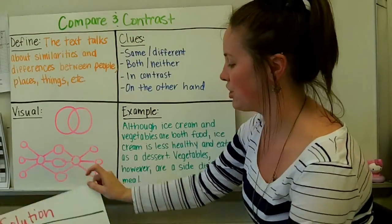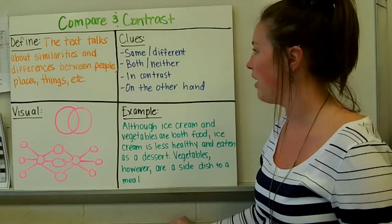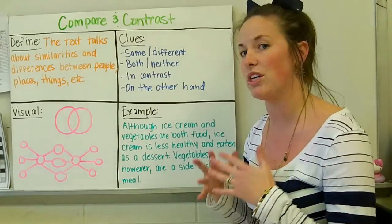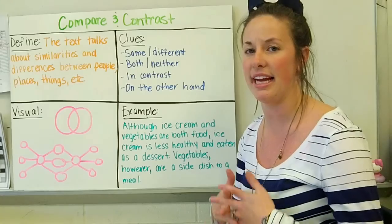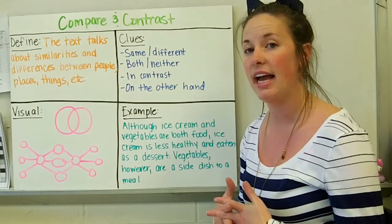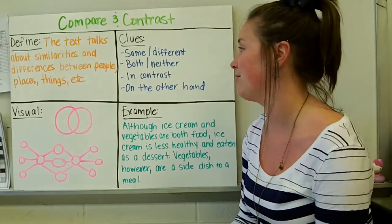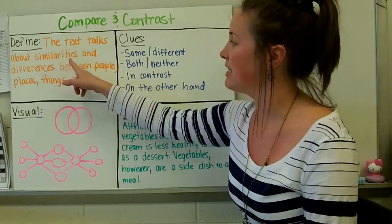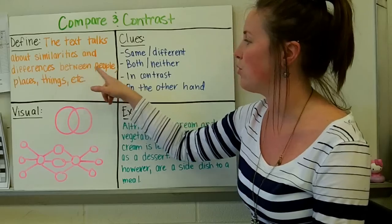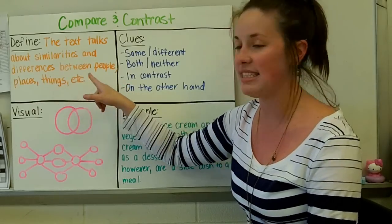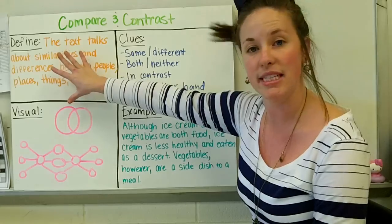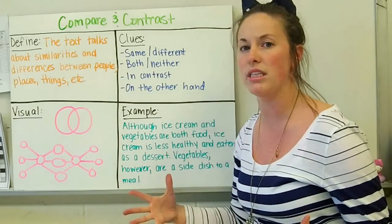The fourth text structure that we are going to be talking about is compare and contrast. And we're all very familiar with the words compare and contrast. Compare means to tell things how things are alike. And to contrast means to tell how they're different. So a good definition would be the text talks about similarities and differences between people, places, things, etc. And we all know what etc means. That means that it's not limited to just this. It could be so much more than just that.